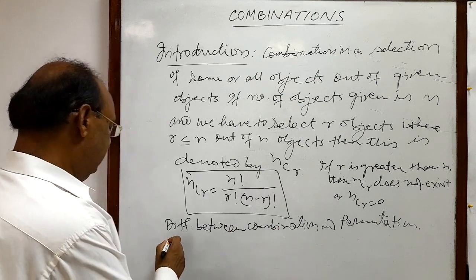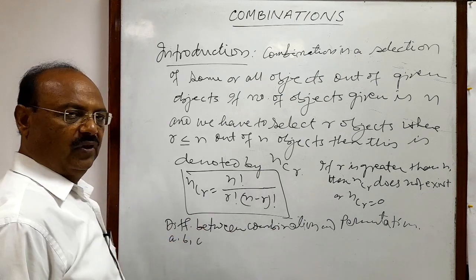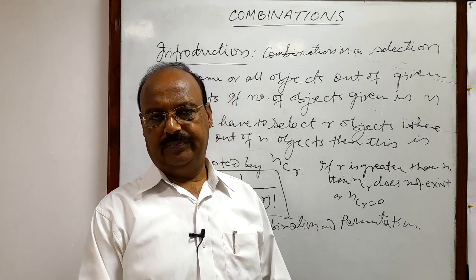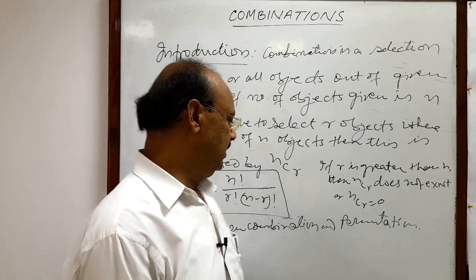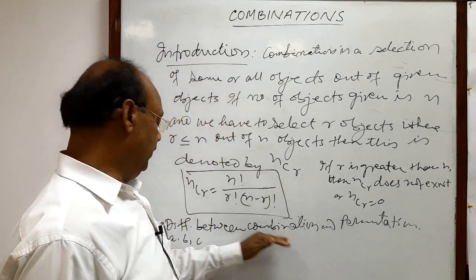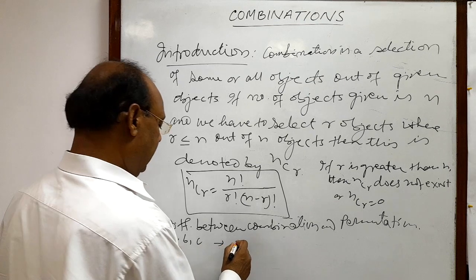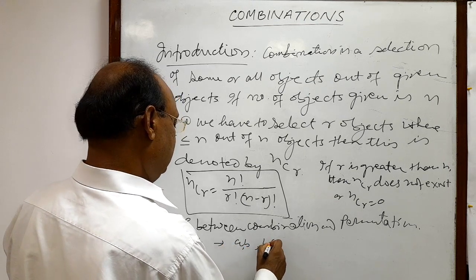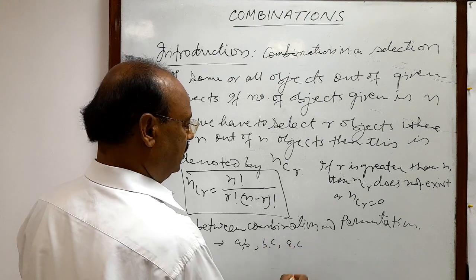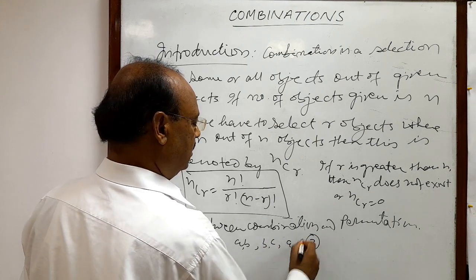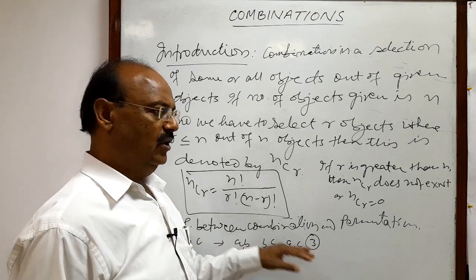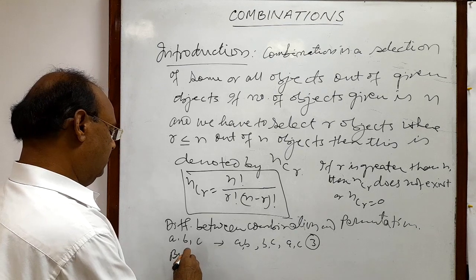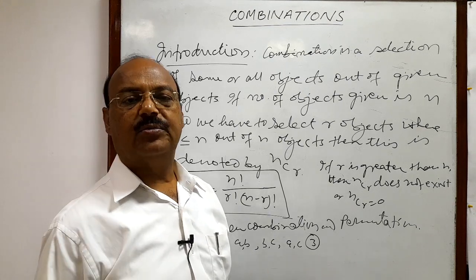Suppose we have three objects A, B, and C, and we have to select two objects at a time. In the case of combination, we will have either AB, BC, or AC — giving three possible combinations.